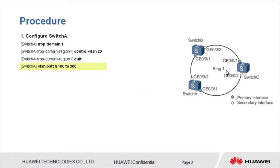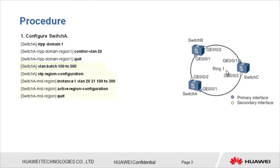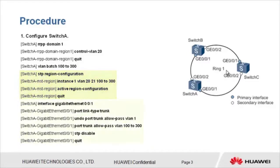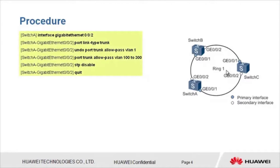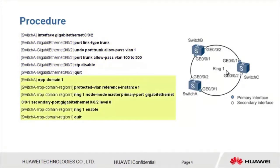Then create allowed data VLANs 100 to 300. Map instance 1 to control VLANs 20 and 21 and data VLANs 100 to 300. Configure GE001 to be added to the RRPP ring as a trunk interface, allowing VLANs 100 to 300 to pass through, and disable STP on GE001. Configure GE002 similarly. Then specify a protected VLAN, create and enable an RRPP ring, and enable RRPP.